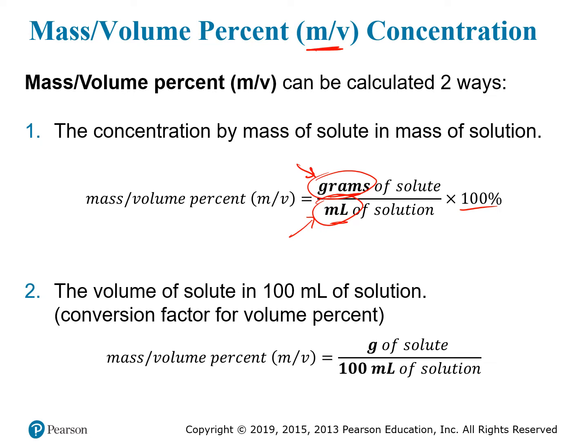Even though m/v percent is a bit unusual, it is the most common percent concentration quoted. If you see a concentration for a solution given as a percentage without specifying the type, this is probably what it means — because solutes are often solid (measured by mass) while the solution itself is liquid (measured by volume). Another way to think about it: grams of solute per 100 milliliters of solution. A 10% m/v solution means 10 grams of solute in 100 milliliters of solution.